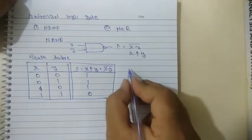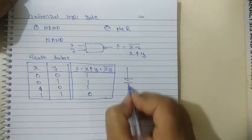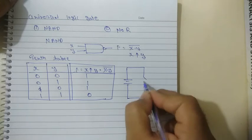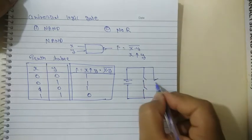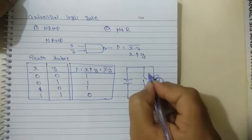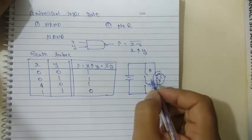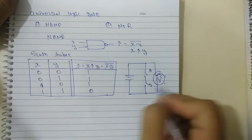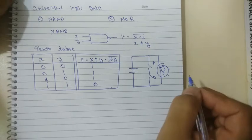For the electrical equivalent circuit of the NAND gate, with switches A and B: if both switches are closed, the output will be 0. If any one switch is open, the lamp will glow.